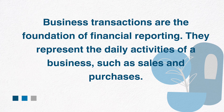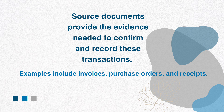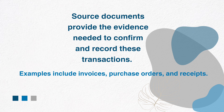To summarize: business transactions are the foundation of financial reporting, representing the daily activities of a business such as sales and purchases. Source documents provide the evidence needed to confirm and record transactions — examples include invoices, purchase orders, and receipts. The when, how, and where concepts help us understand the role of source documents in the accounting process. This knowledge is essential for understanding double entry bookkeeping, which we will explore in future lectures. Thank you for joining — make sure to like, subscribe, and share so other students can benefit from these free resources.